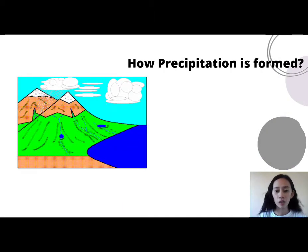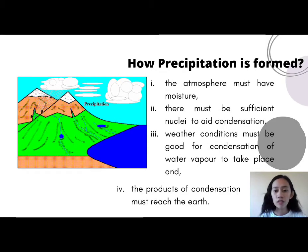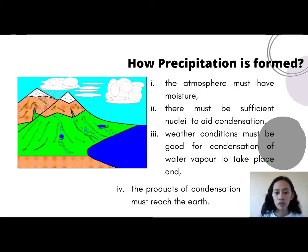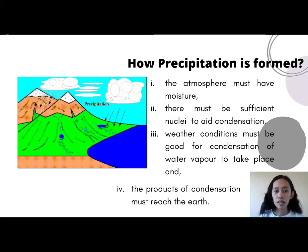Next, how precipitation is formed. First, the atmosphere must have moisture. There must be sufficient nuclei to aid condensation. Third, weather conditions must be suitable for condensation of water vapor to take place. And lastly, the products of condensation may reach the earth. Precipitation results when water droplets come together and merge to form larger drops that get dropped down. Its place and form depend upon meteorological factors such as weather elements like wind, temperature, humidity, and pressure in the region near the clouds and the ground surface.